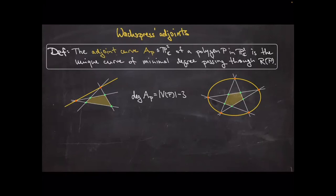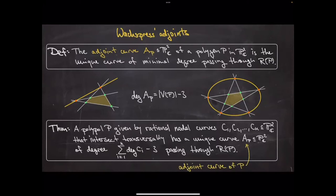In general, the degree of the adjoint is the number of vertices minus three, which may be familiar from the adjunction formula.